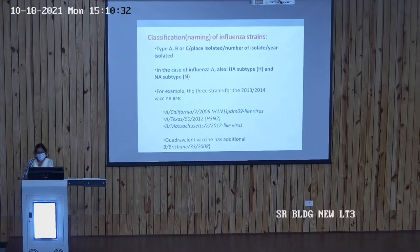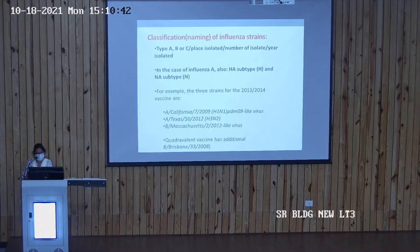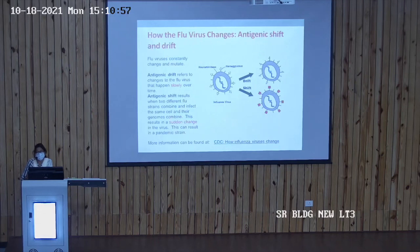For classification of influenza strains, in Type A, strains are named by HA subtype and NA subtype. For example, one of the three strains for the 2013–14 vaccine is A/California/7/2009 H1N1 PDM09-like virus.